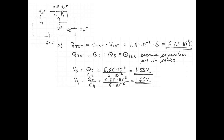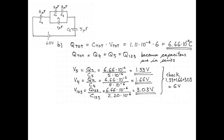The potential difference across capacitor 4 is 6.66 microcoulombs divided by 4 microfarads, which is 1.66 volts. The voltage across the equivalent capacitance of the parallel arrangement is 6.66 microcoulombs over 2.2 microfarads, giving 3.03 volts. This is a good opportunity to check: the sum of the voltages, 1.33 plus 1.66 plus 3.03, equals 6 volts. Awesome!